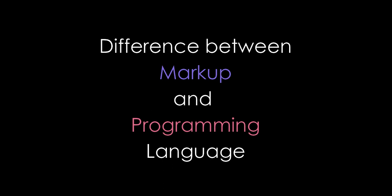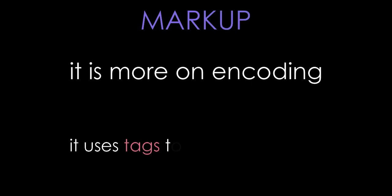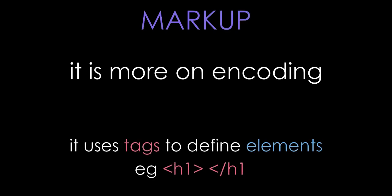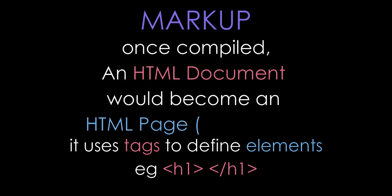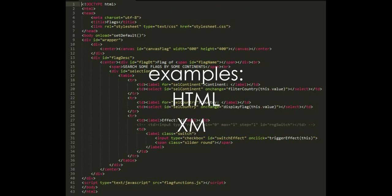Difference between markup and programming language. Markup language is more on encoding — it uses tags to define elements within a document. A document is an HTML page. It is easier to read compared to programming languages because it has structure; it looks like a text structure with design once interpreted. Examples of this are HTML, XML, and XHTML.